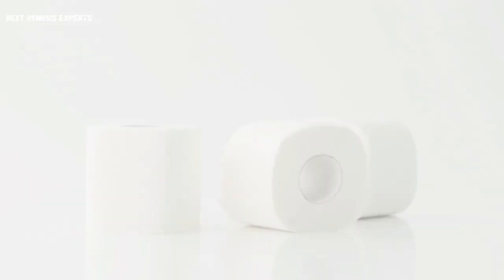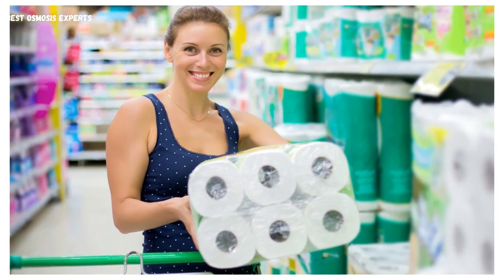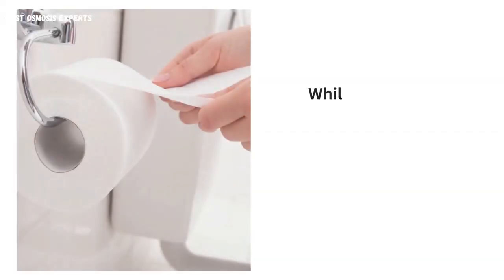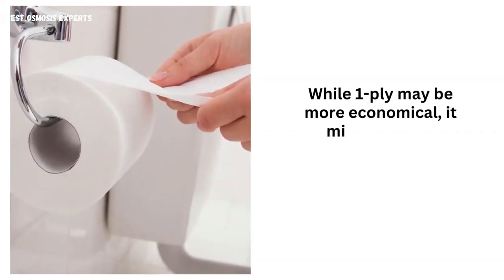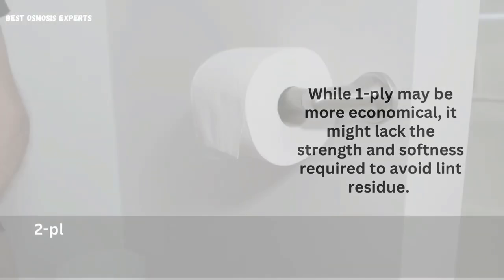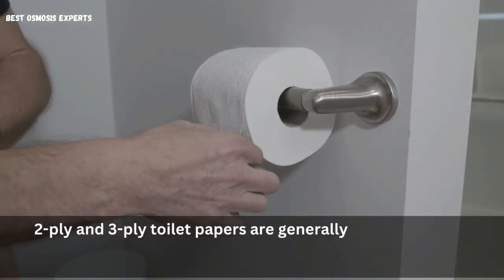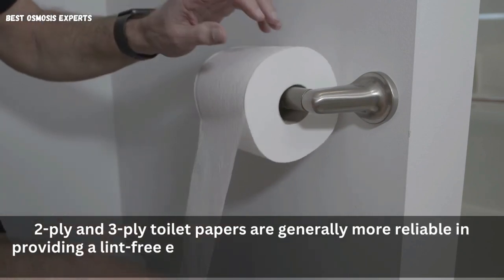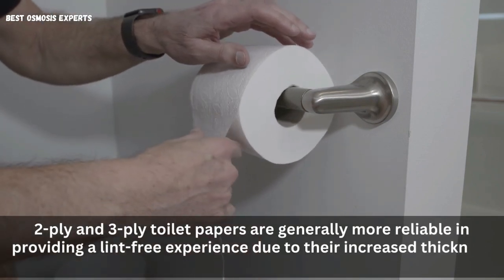Choosing the right ply: toilet papers come in various ply options, such as one-ply, two-ply, or three-ply. While one-ply may be more economical, it might lack the strength and softness required to avoid lint residue. Two-ply and three-ply toilet papers are generally more reliable in providing a lint-free experience due to their increased thickness and durability.